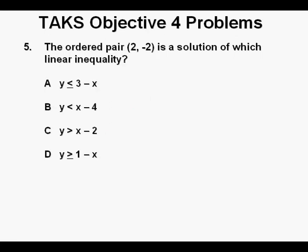Problem 5: The ordered pair 2 comma negative 2 is a solution of which linear inequality? This problem is similar to the last one, problem 4. Probably the easiest way to do it is to substitute x and y values into the inequality and see which one works.